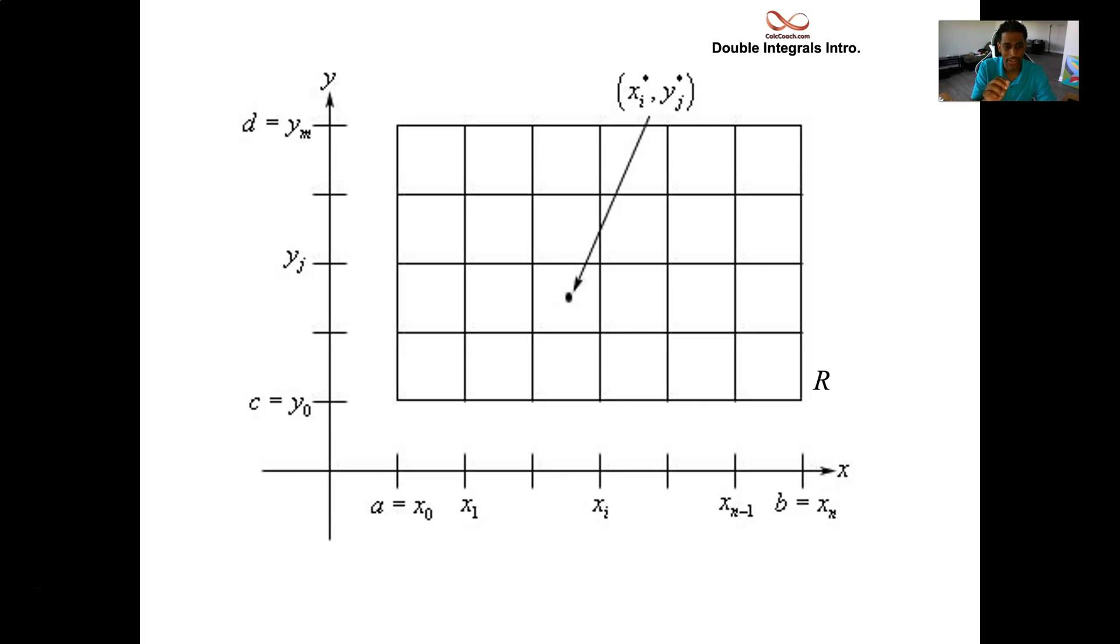We're going to pick a place in the rectangle to evaluate the function, call that xi star yj star, it's a point. We plug that point into the function. What we get out, coming above this, will be some surface. We get area of the base times the height, giving us a rectangular prism, a box. This one has 24 different boxes.